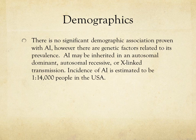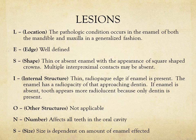The demographics show no significant demographic association proven with AI. The incidence is about one in fourteen thousand people in the U.S. It can occur in the mandible or maxilla. Radiographically, the enamel will be thinner or absent with square-shaped crowns, a thin radiopaque edge if enamel is present, all teeth in the oral cavity are affected, and size depends on the amount of enamel affected.